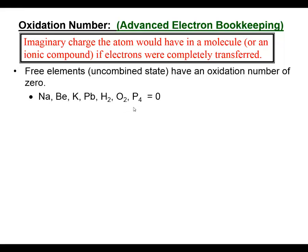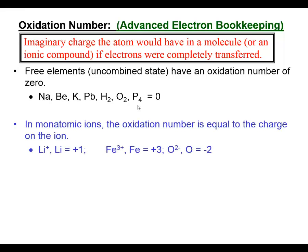If we have a monoatomic ion with a charge, monoatomic ion charges happen to be equal to the oxidation numbers we are determining. In the lithium cation, the oxidation number is a plus one - it happens to be the same as the charge only for monoatomic ions. For the iron three cation, the oxidation number would be plus three.